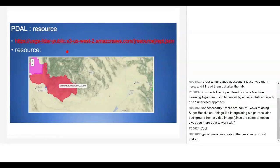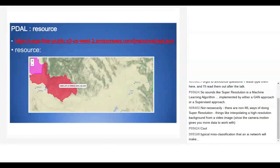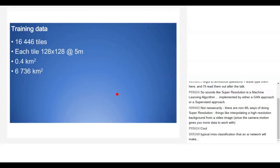The USGS publishes all 23 bazillion points on S3 publicly available. From the colored polygon map you zoom in, get the project name, stick it in the URL, and it points to an ept.json file containing the metadata. PDAL just knows how to read that. I wrote a big for-loop to collect as much data as possible — I ended up with 16,000 tiles, each 128×128 pixels at 5 meters resolution giving about 0.4 square kilometers per tile, totalling about 6,000 square kilometers of training data.